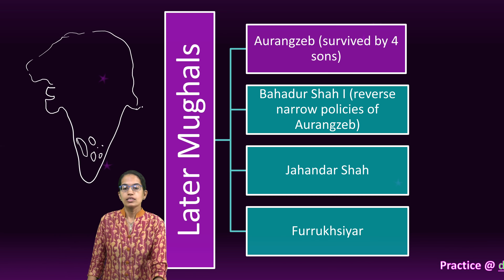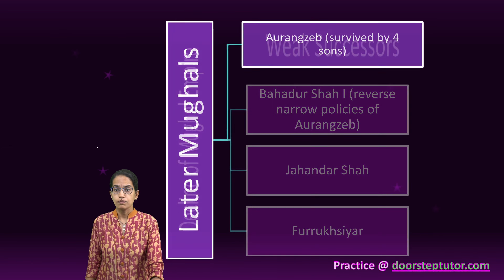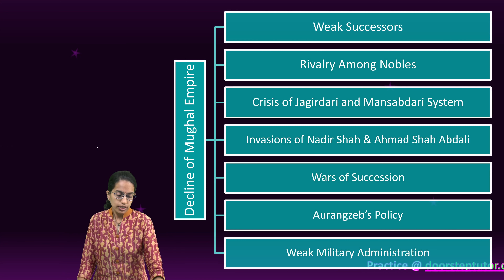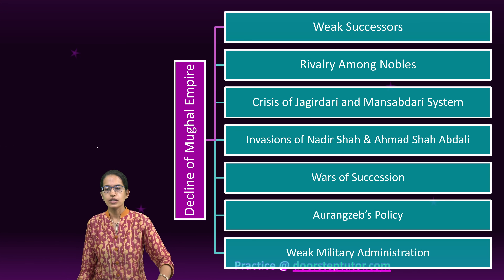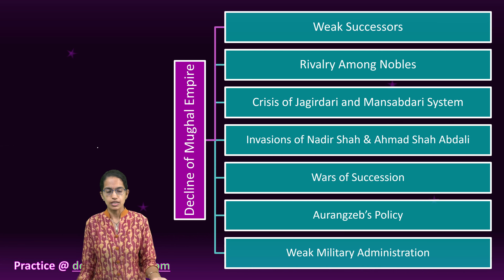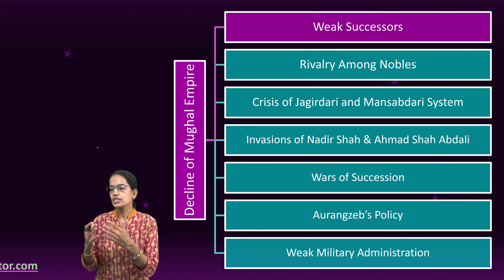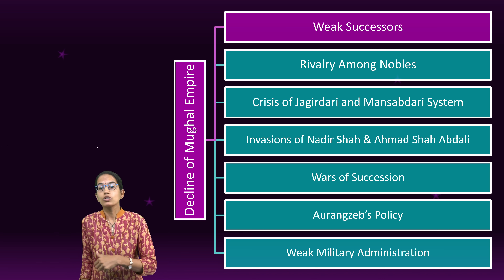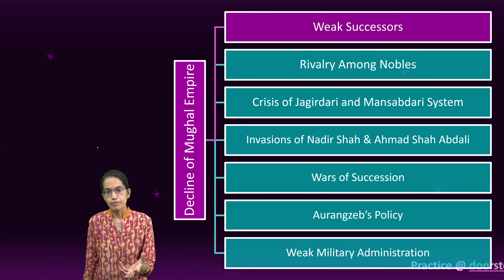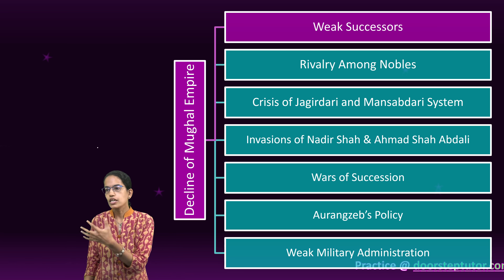Focusing on the issues after the Mughal Empire, there were numerous reasons which led to its decline. The first important concept was that the next rulers — the successors — were weak. They were not able to maintain unity, they were not good administrators, and they actually ran a puppet government. The policy of friendship and peacemaking was the key idea, and they had no idea about the process of administration.